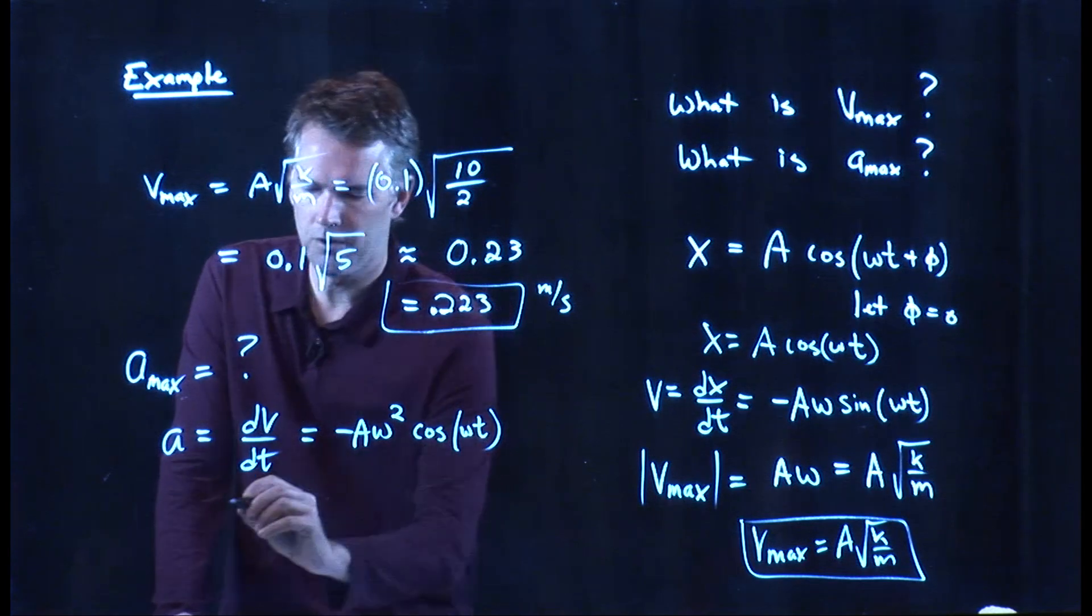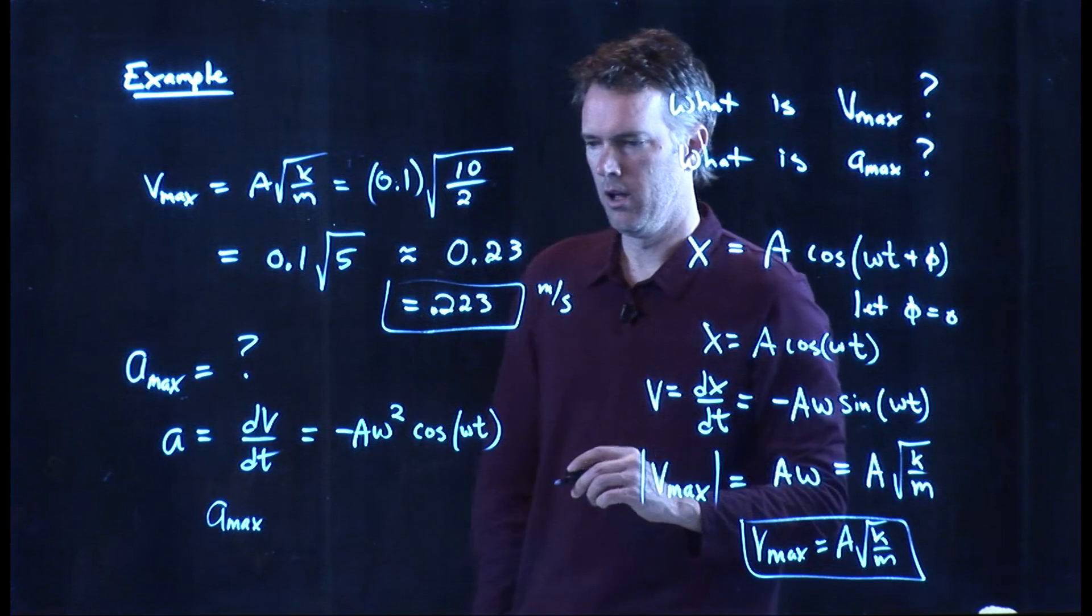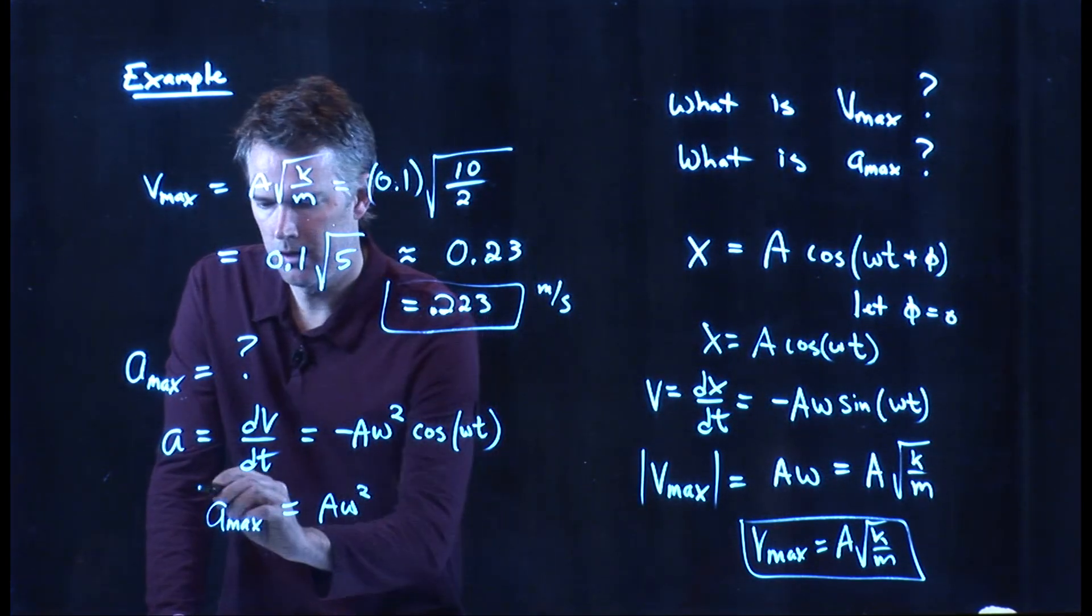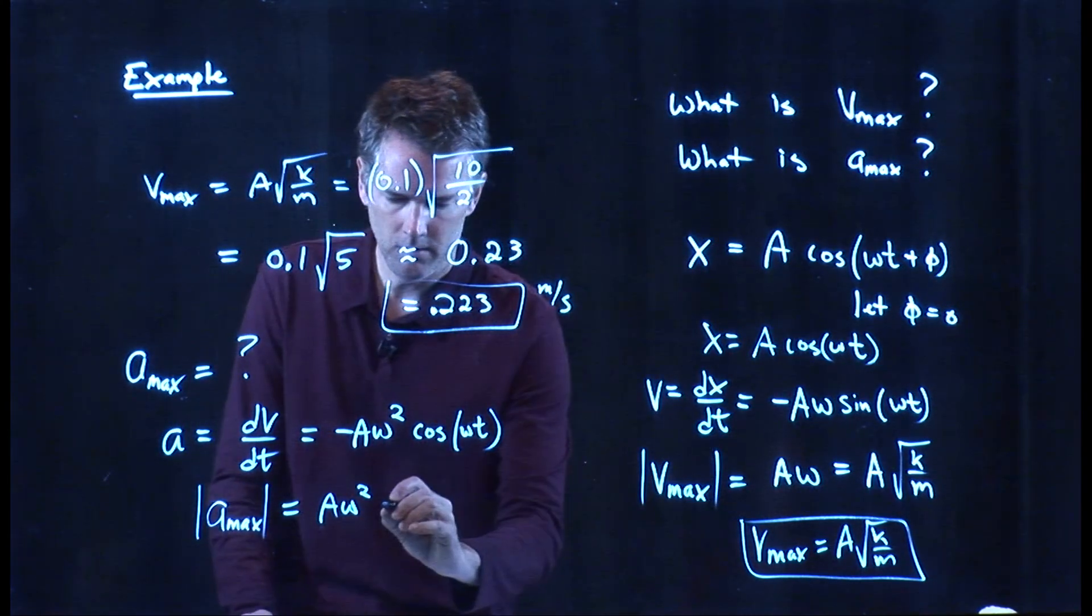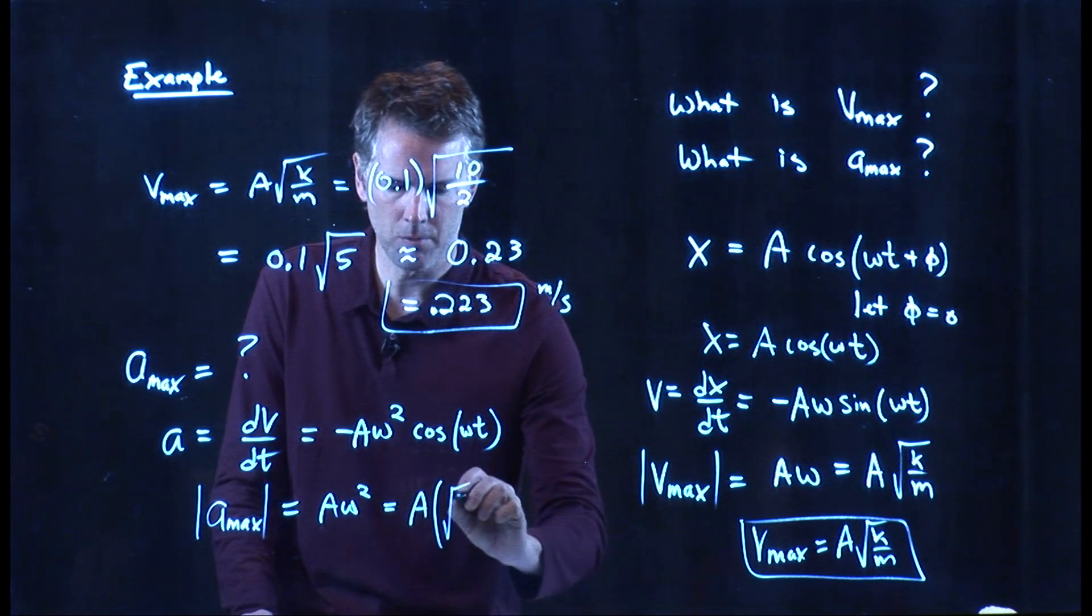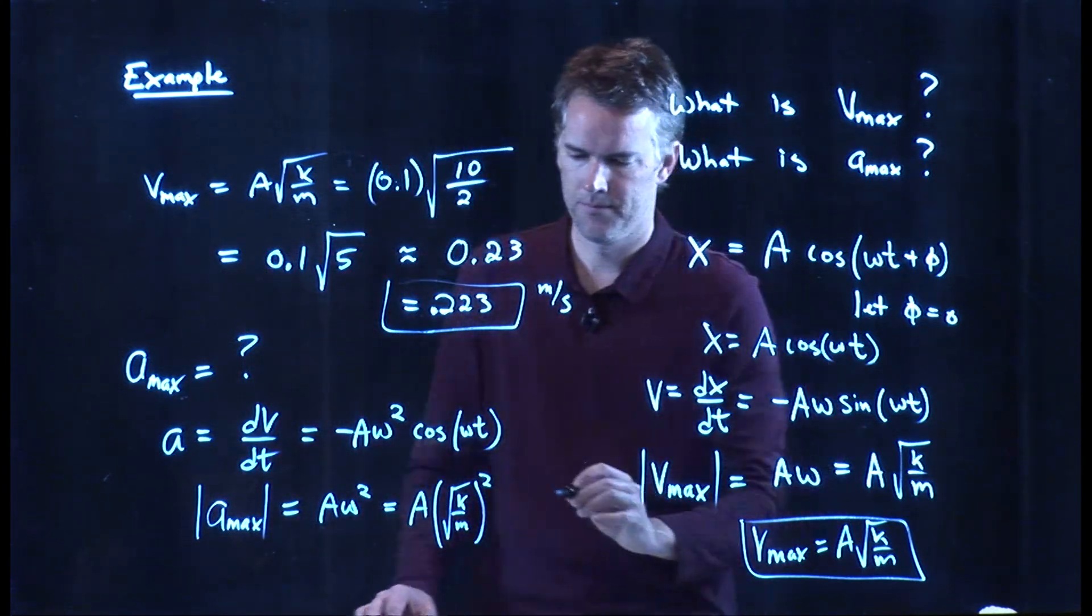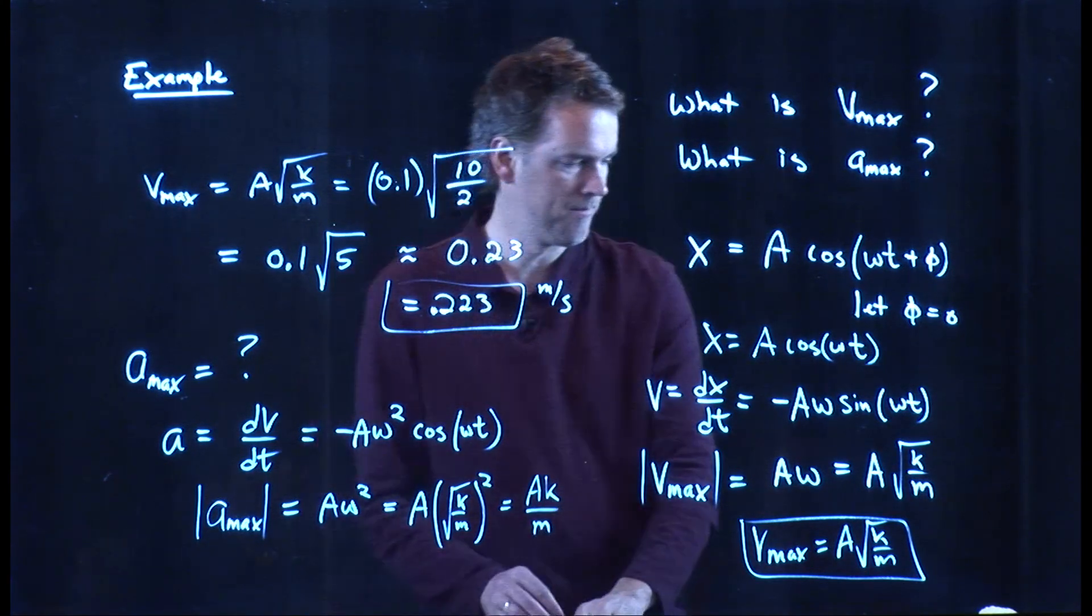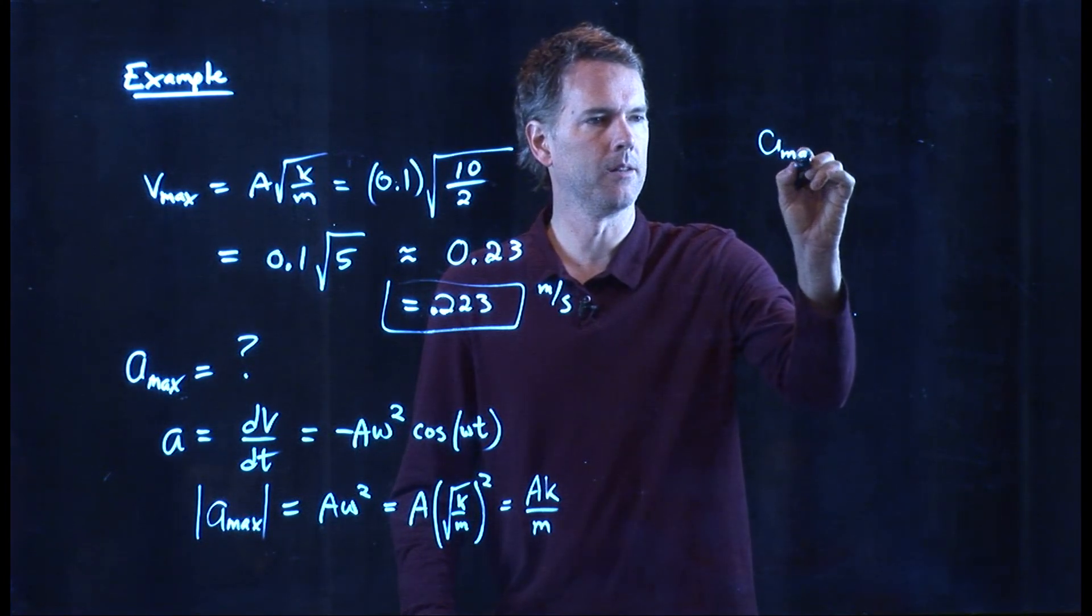And now, again, cosine can only go up to 1 and down to negative 1. So, the maximum acceleration is just going to be A omega squared. Just worry about the magnitude of it, not the sign. And now, look what happens. Omega is the square root of K over M, but we're going to square it. And so, we get AK over M. And now, we can plug in some of those numbers and calculate A max.